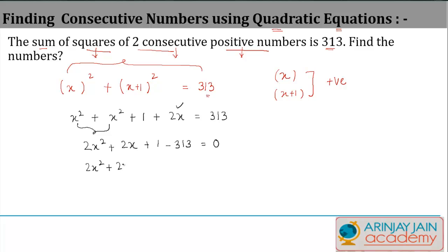Simply speaking, 2x² + 2x - 312 = 0. If you notice the left-hand side, 2 is a common multiple in all these numbers, so I can also write this as 2(x² + x - 156) = 0.